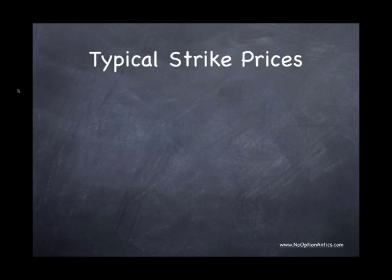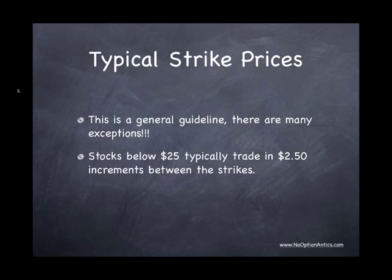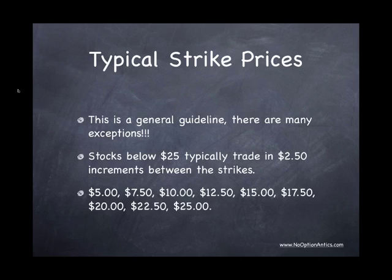Let's talk about some typical strike prices that are out there. These are a guideline — take it as a guideline because there are many exceptions. Stocks below $25 generally will have $2.50 in between the strike price increments, meaning strike prices at $5, $7.50, $10, $12.50, $15, $17.50, $20, $22.50, $25.